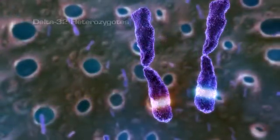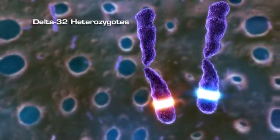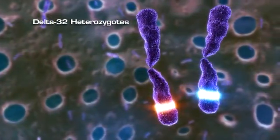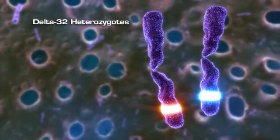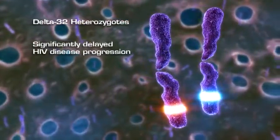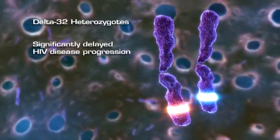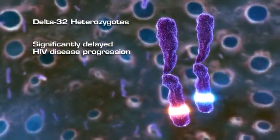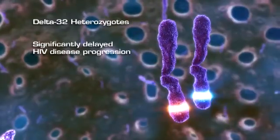Delta 32 heterozygotes inherit one copy of the CCR5 Delta 32 variant from one parent and a normal form of the CCR5 gene from the other parent. Delta 32 heterozygotes can become infected with HIV, but disease progression is significantly delayed compared to those who have two normal copies of the CCR5 gene.